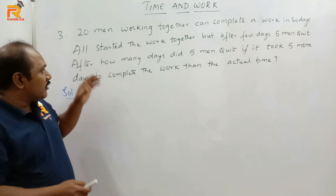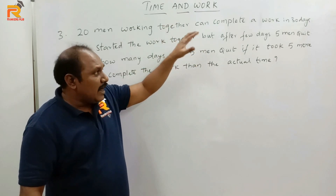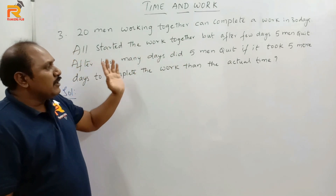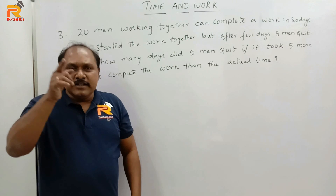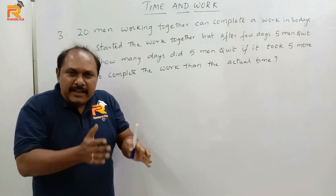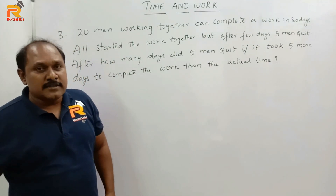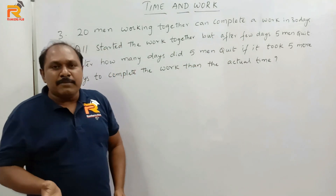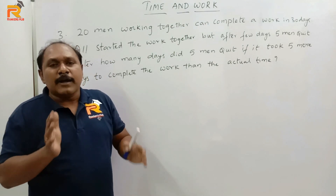The work will be completed in 30 days. All started together but after few days 5 men quit. How many men are working from the first day till the last day? 5 men left in between, and there are totally 20 men, so 15 men are working from the first day till the last day. Actually the work should be completed in 30 days, but because 5 men quit it took 5 more days. That means these 15 men are working for all 35 days to complete the work.